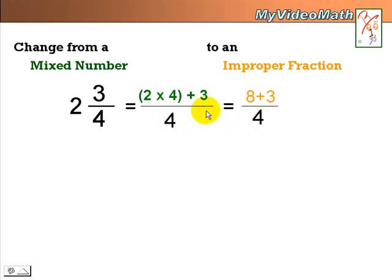And then we need to evaluate the upper portion. So, the new numerator becomes 8 plus 3. That equal to 11 over 4. And this is a converted improper fraction.